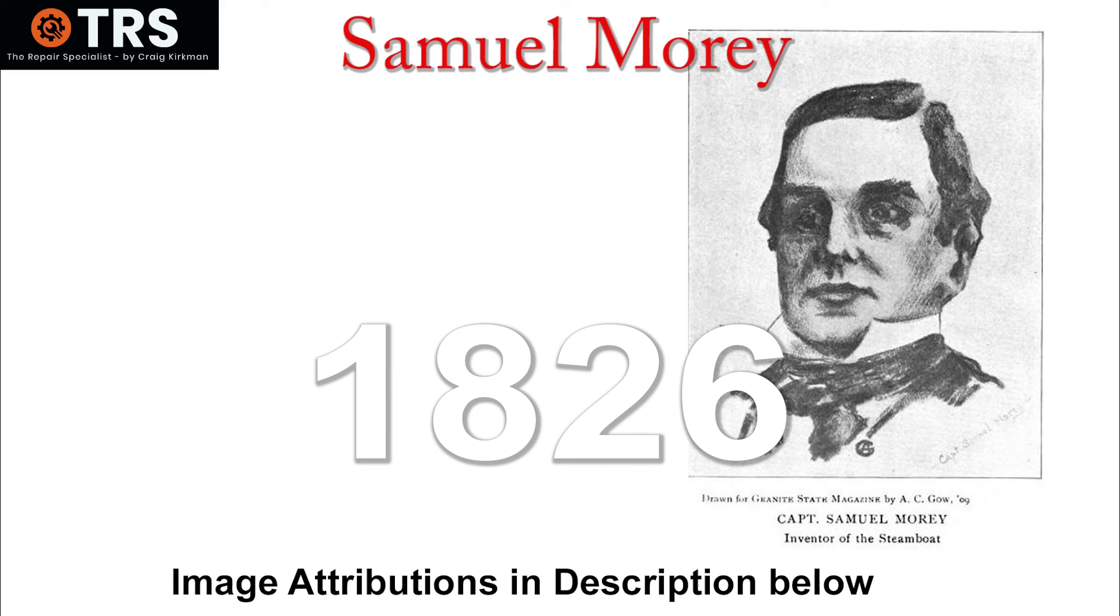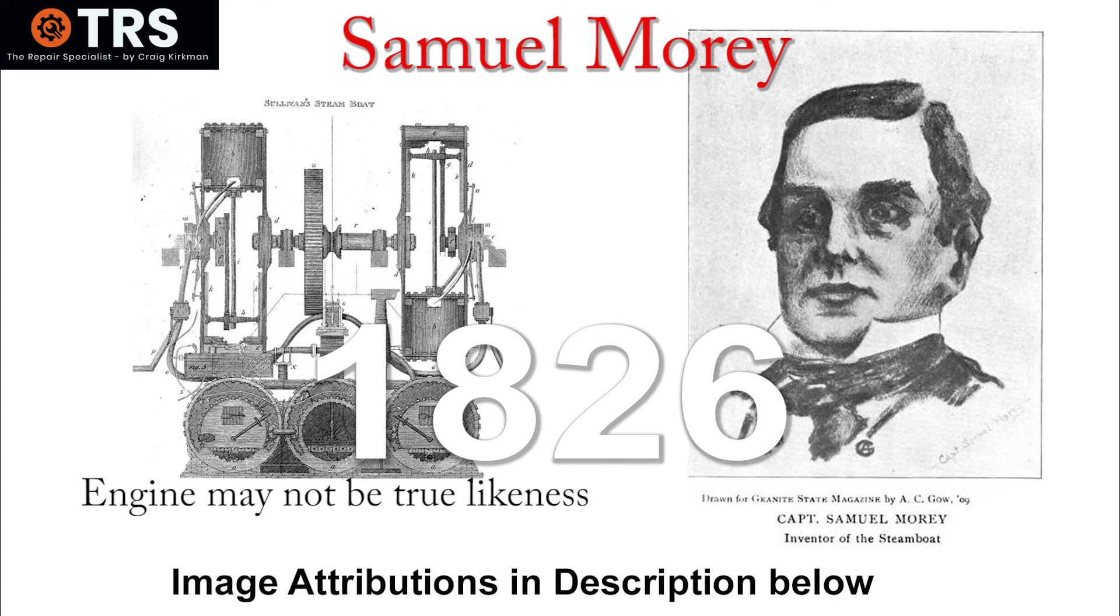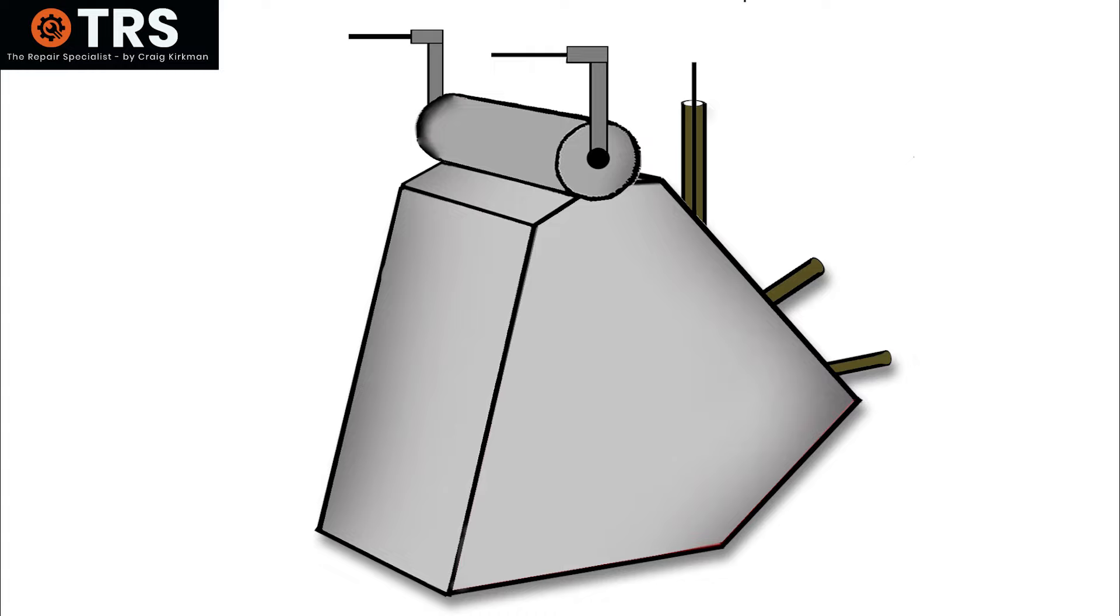The American inventor Samuel Moray invented and showcased his version of the internal combustion engine. Now this internal combustion engine didn't quite work like the ones we see today. It was more like a steam engine. But unlike the engines today that run on gasoline fuel, this engine's primary source of fuel was turpentine. But on that engine was apparently a type of surface carburetor.